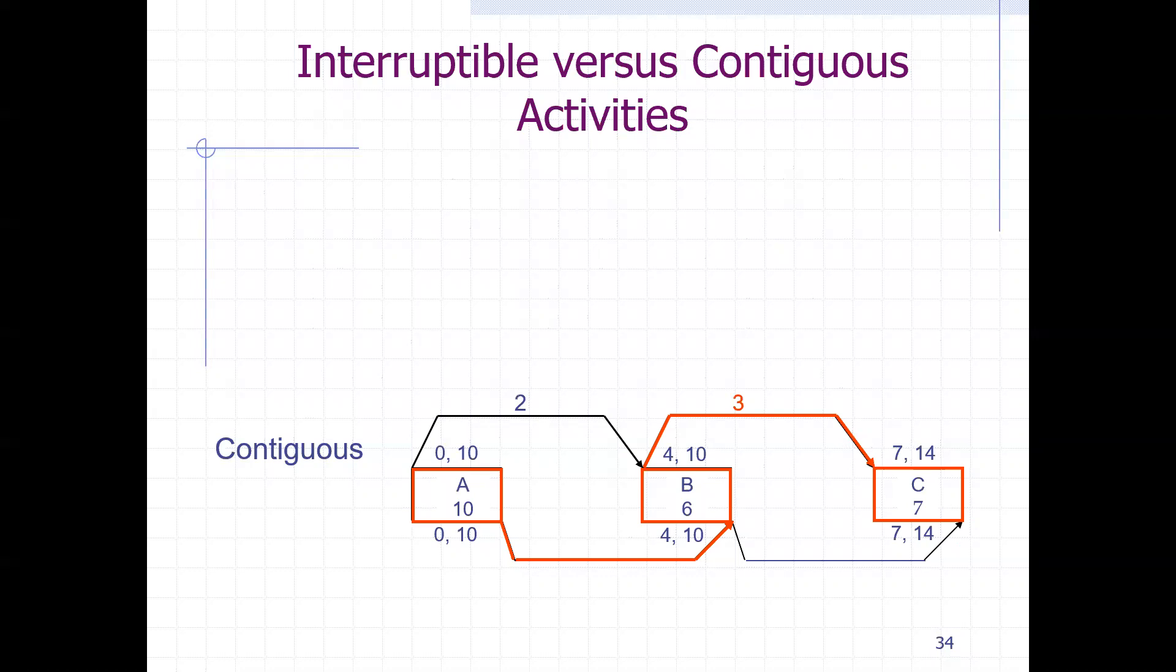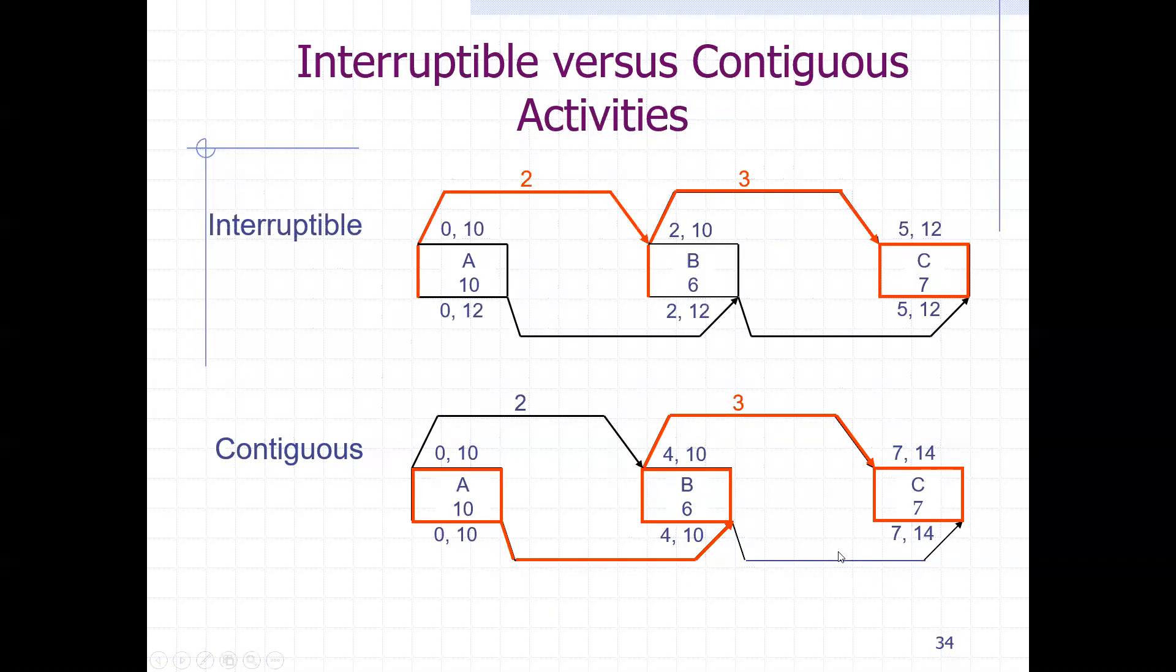So then for a contiguous activity, as you can see here, the start-to-start here is optional or non-critical, but the start-to-start between B and C, it's definite and must fall under this restriction with a lag of 3. The same goes for finish-to-finish without lag, but here is uncritical.